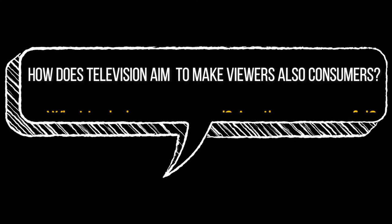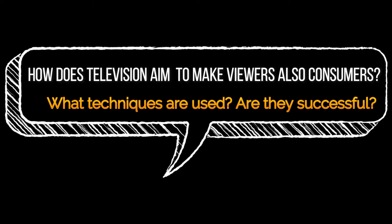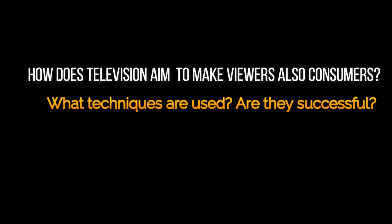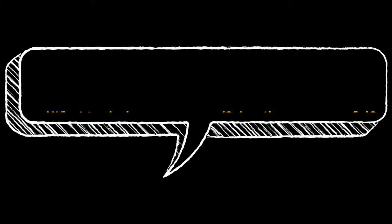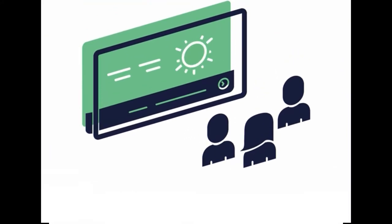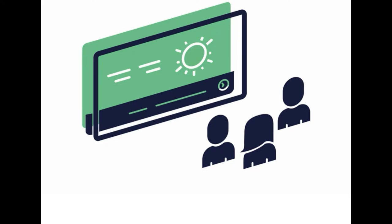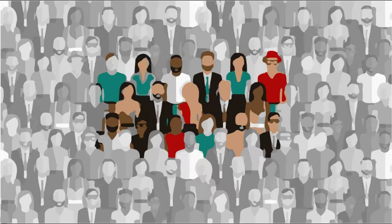You might ask: in what ways does television aim to make viewers also consumers? What techniques are used and are they successful? In order to target audiences, advertisers and TV producers will use narrowcasting as a way to define audience characteristics. Narrowcasting is successful because it offers a more defined set of characteristics than most network programming.